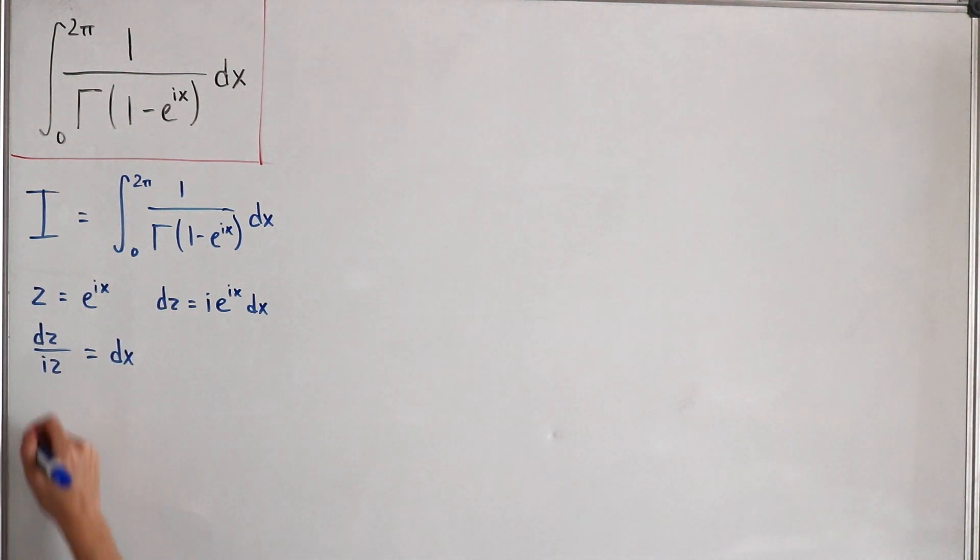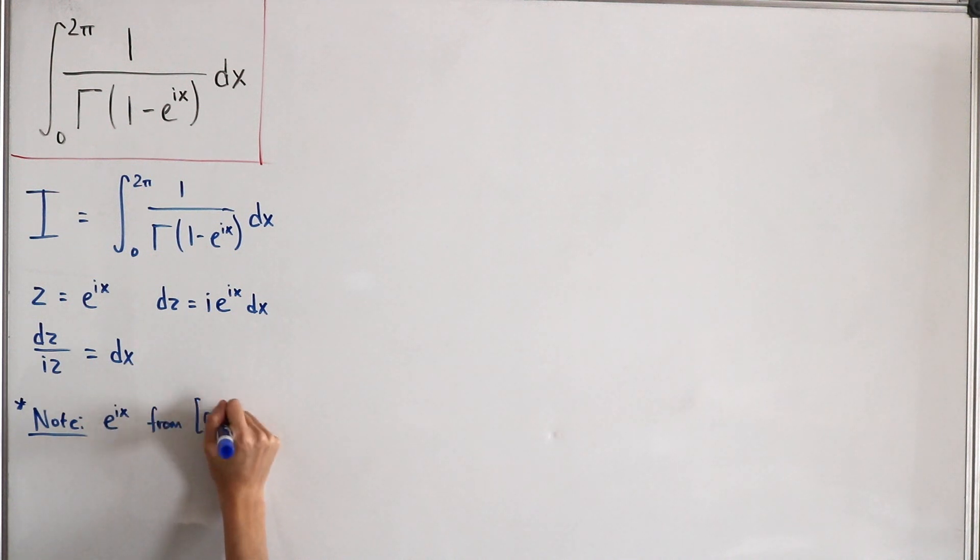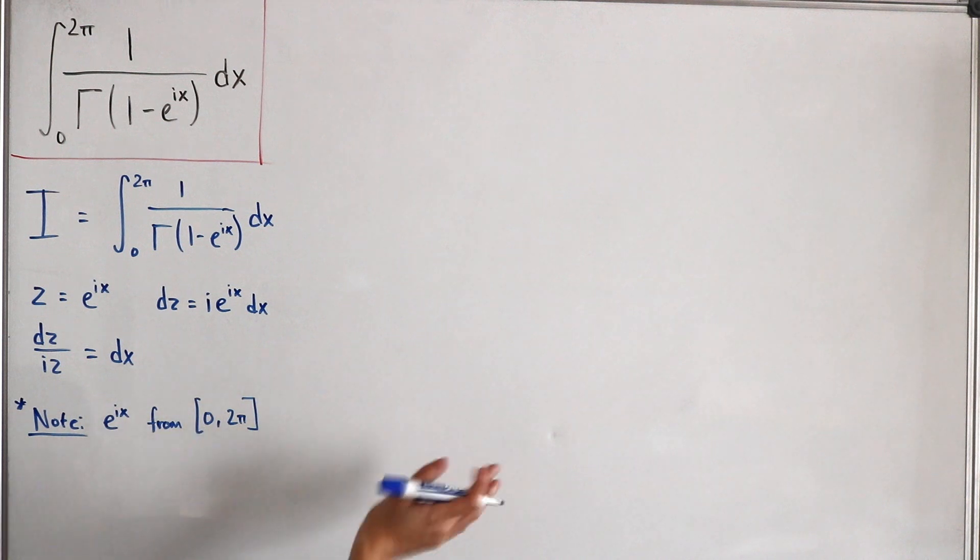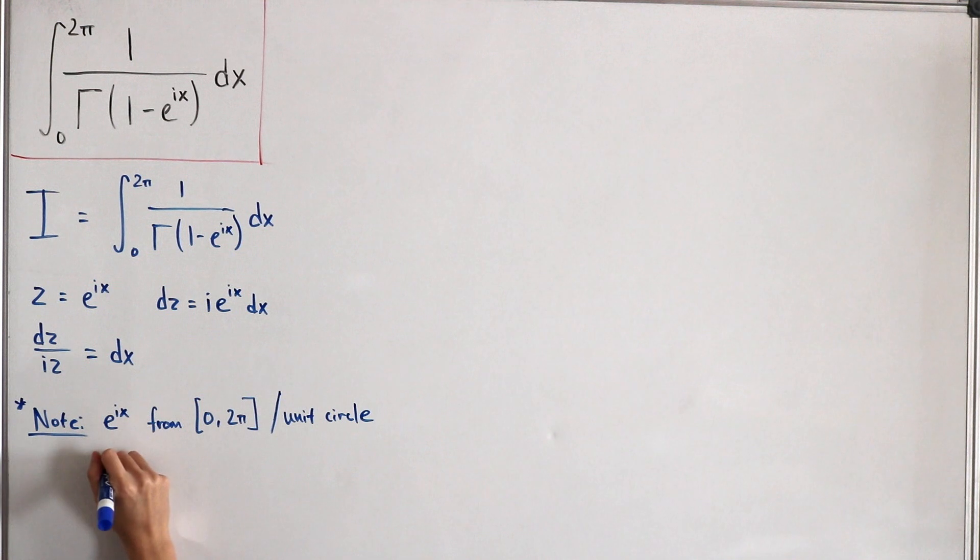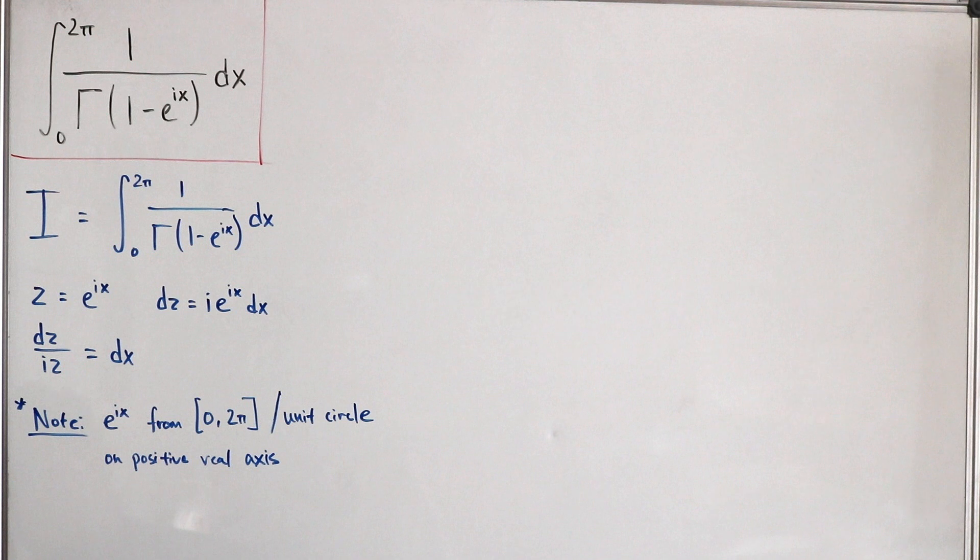Now, we notice that I'll put in a note and say that our exponential function Euler's formula, e to the power ix, from our closed interval from 0 to 2π, this actually describes the path along that unit circle. Again, this is Euler's formula describing the circle of the shape. So it's a path along the unit circle from the positive real axis. I'll put unit circle on the positive real axis.